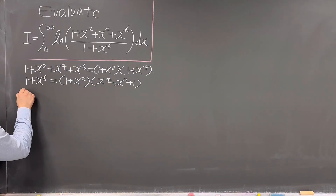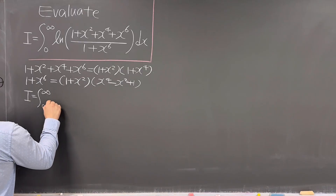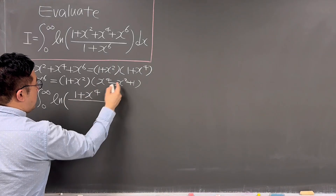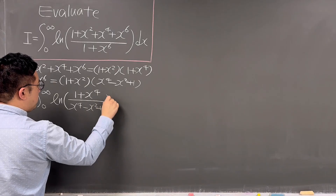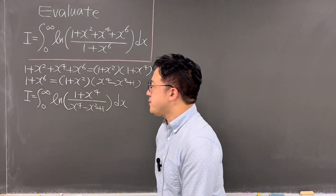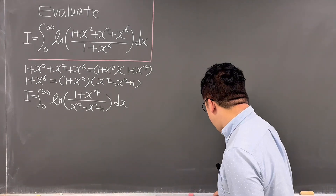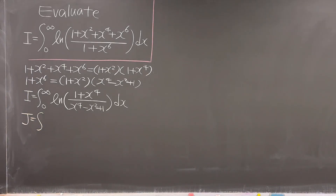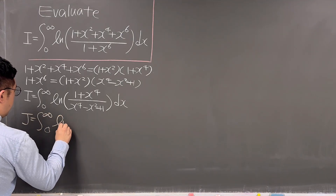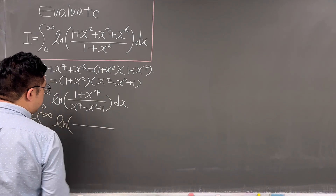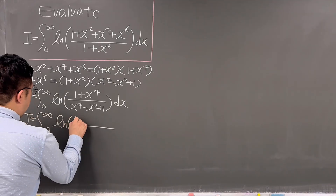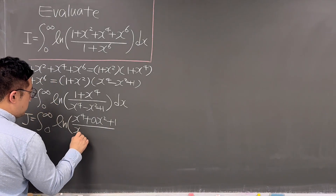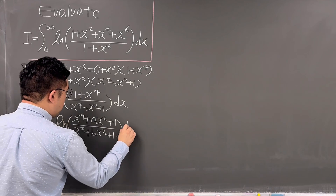So integral I is the same as the integral from 0 to infinity of ln((1 + x⁴) / (x⁴ − x² + 1)) dx. I'll be calling this J. So let me call the integral J as the integral from 0 to infinity of ln of (x⁴ + ax² + 1) / (x⁴ + bx² + 1) dx.